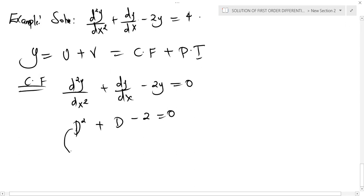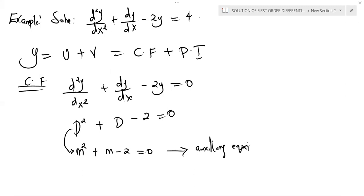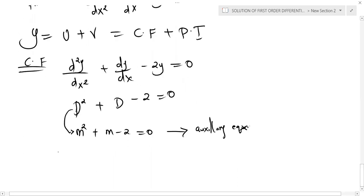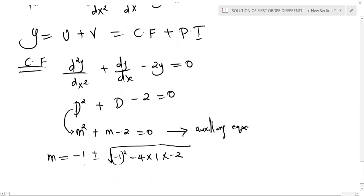We replace d² with m² to form the auxiliary equation. Using the quadratic formula, m equals minus 1 plus or minus the square root of (−1)² − 4 times 1 times −2, all over 2 times 1. Evaluating correctly, we find m = 1 and m = −2.